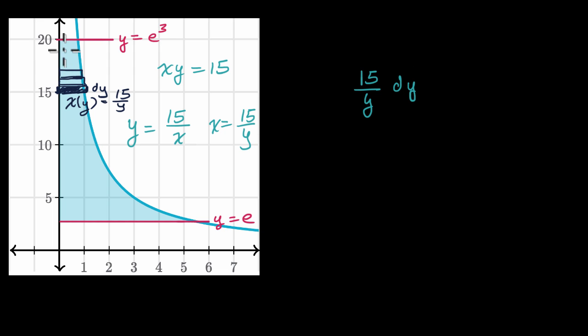And then we want to sum all of these little rectangles from y = e all the way to y = e³. That's what our definite integral does. We go from y = e to y = e³.